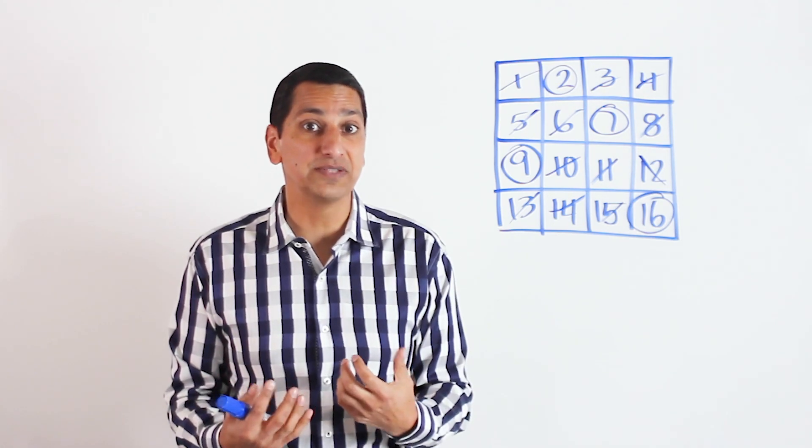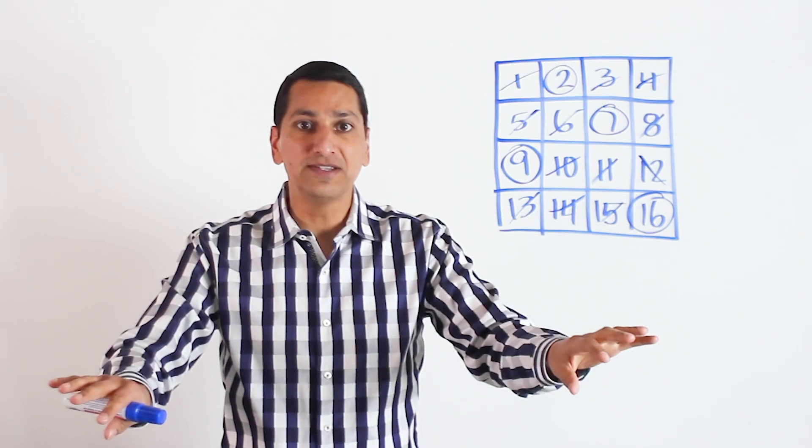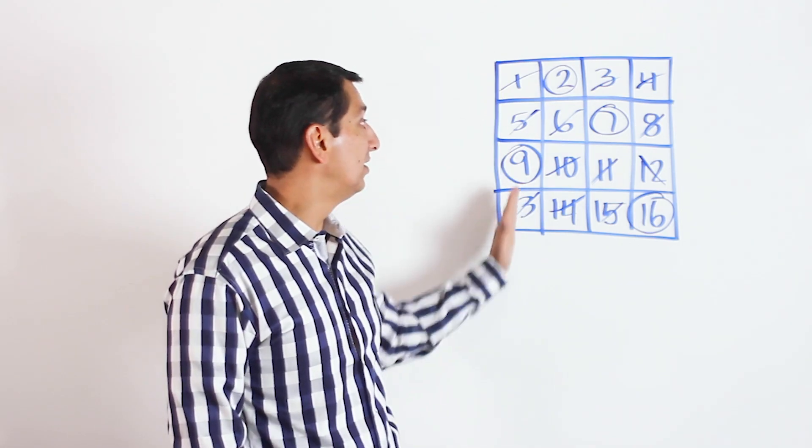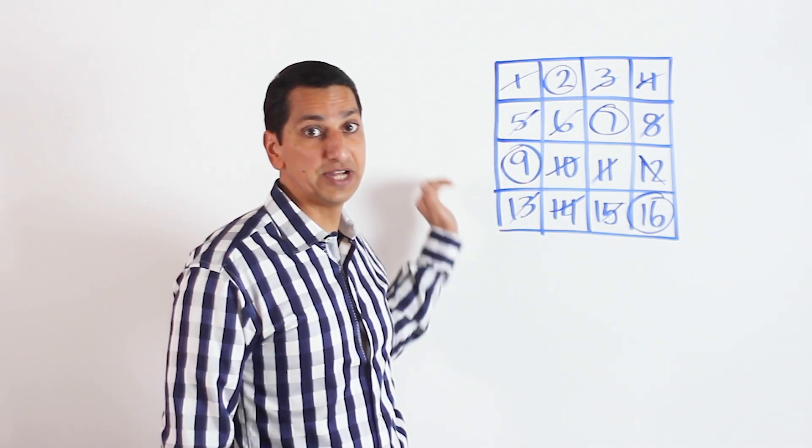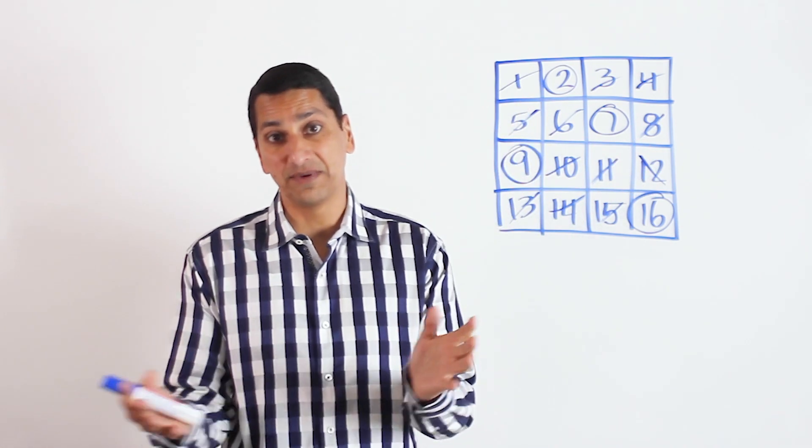Then a natural question is, well, what if we pick four different numbers? Well, yeah, go off, work with your friends, write down this chart, pick four different numbers. Make sure you're always picking one in each row. Sorry, one in each column, one in each row. Never duplicating a row or a column. Otherwise, it won't work.